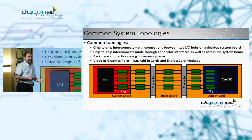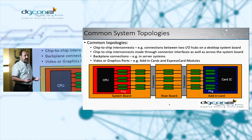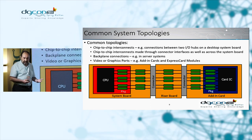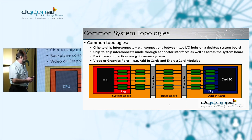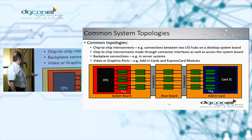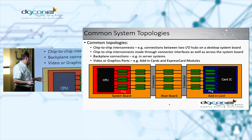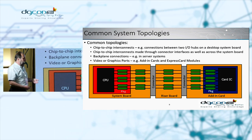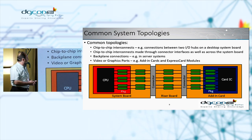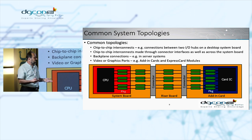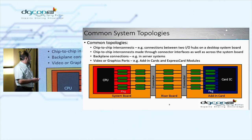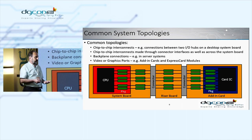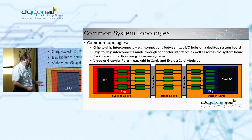PCIe is very flexible and versatile, supporting a wide variety of topologies. Some are chip-to-chip interconnects on the same system board with no connector, while others involve chips on different PCBs connected through connectors. There are server applications running over backplanes, and also video cards using different form factors such as add-in cards and ExpressCard modules.